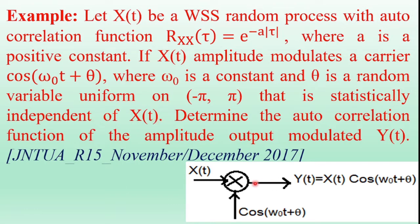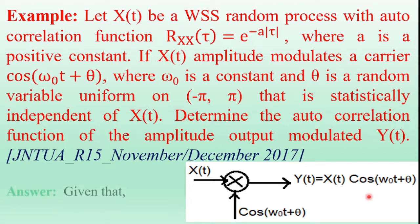In this figure, we have the modulated waveform. This modulator consists of two inputs: one is the input signal random process X(t), and another is the carrier signal cos(ωₒt + θ). The output of this modulated signal is Y(t), which equals the product of these two input signals, that is Y(t) = X(t)·cos(ωₒt + θ).